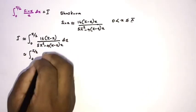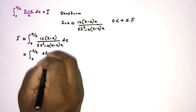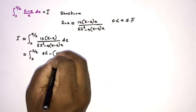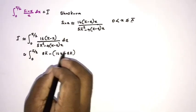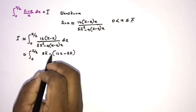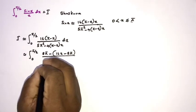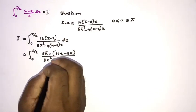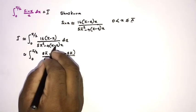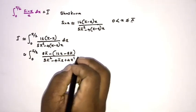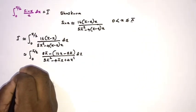Now I am going to rearrange the numerator. We have 16π, so I write it as 8π minus (16x − 8π), which gives 16π − 16x. In the denominator we have 5π² minus 4πx plus 4x². We can now split this into two different integrals.